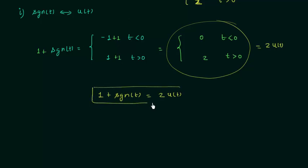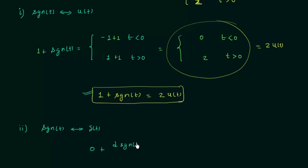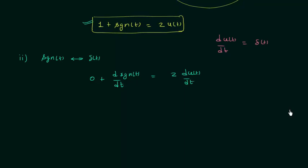In the second property, we will find out the relation between signum function and unit impulse function. For this, I will differentiate the result from property 1. Differentiating both sides: the differentiation of 1 is 0, so d/dt[sgn(t)] = 2 × du(t)/dt. And as we proved in the last presentation, differentiation of unit step function equals unit impulse function. Therefore, d/dt[sgn(t)] = 2δ(t).